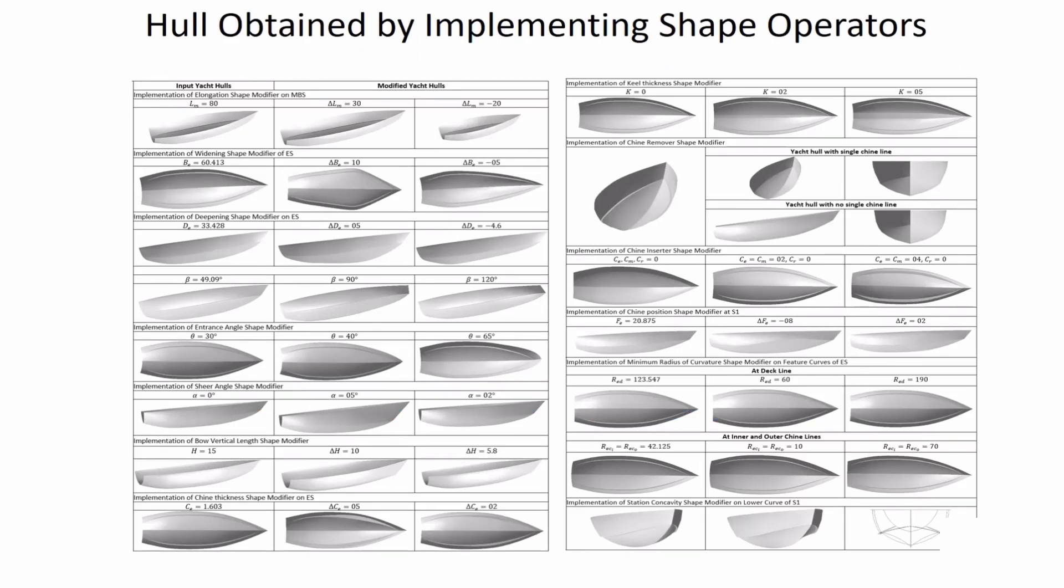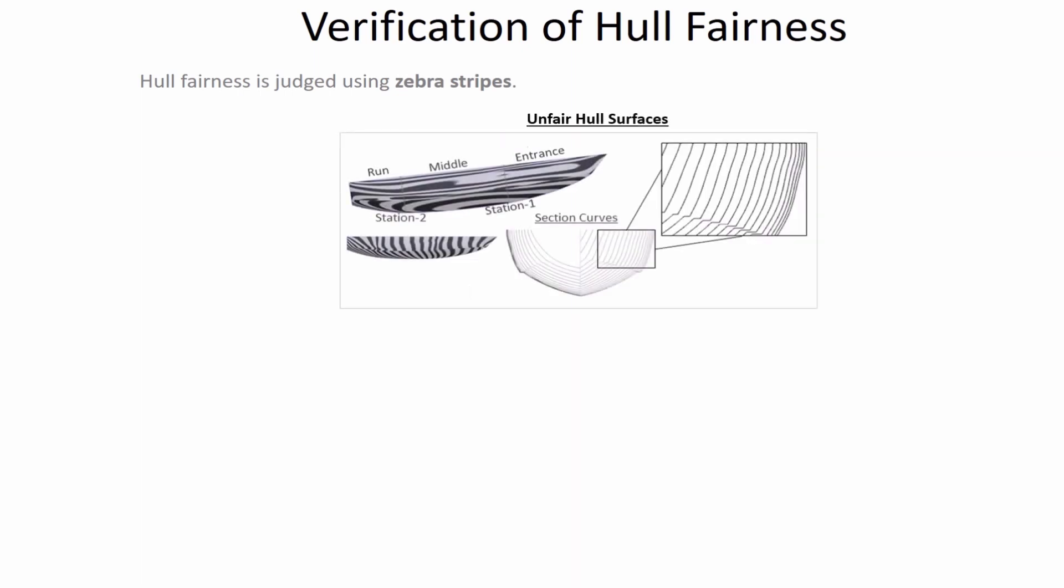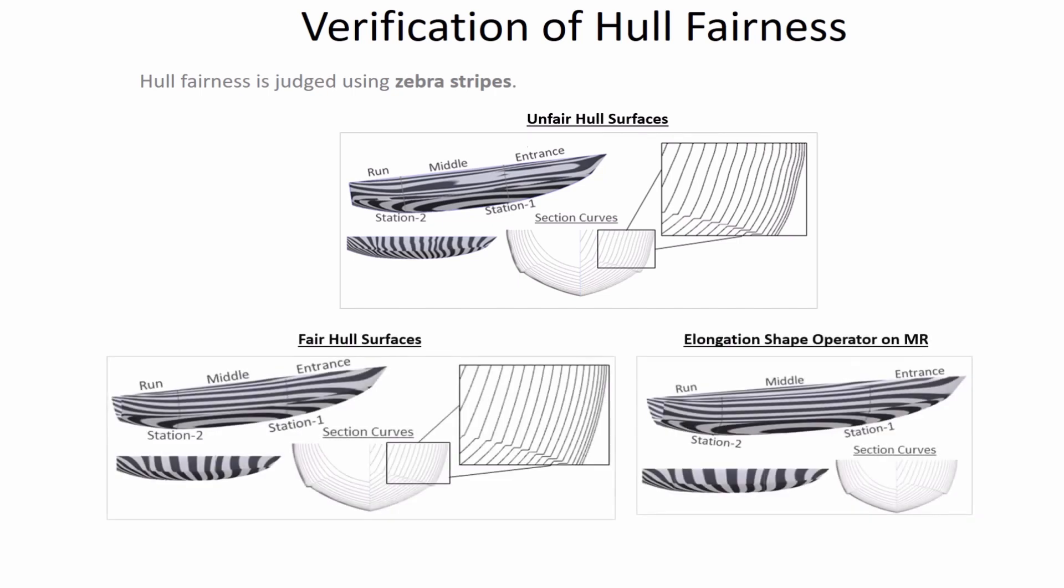These are examples of resulting hulls obtained after implementing the shape operators. We verified hull fairness by displaying zebra stripes, widely used in CAD for surface fairness verification. Irregular transition indicates an unfair hull, whereas smooth transition guarantees a fair hull and G1 continuity between hull regions.